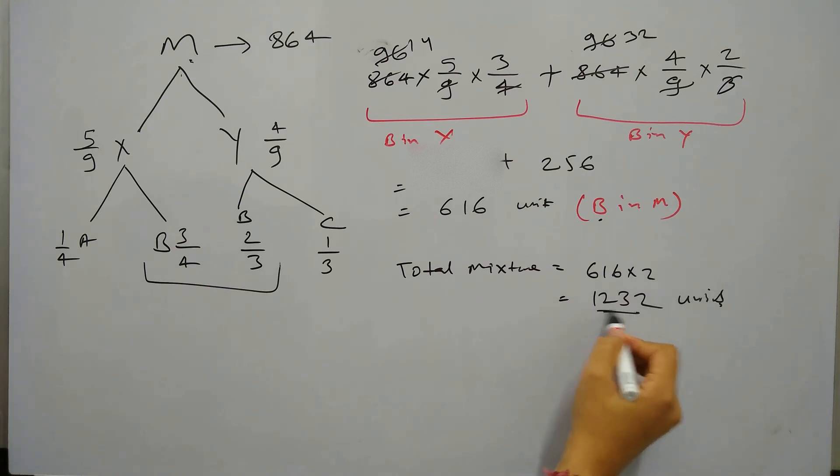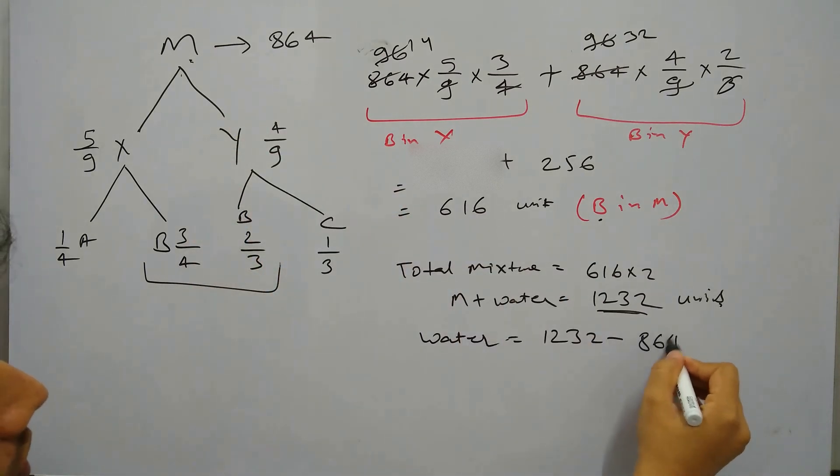So total mixture is this and this is what M plus water. So water will be 1232 minus M and value of M is 864. So this is equal to 368, which is the answer in this case.